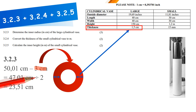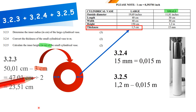Question 3.2.4: convert the thickness of the small cylindrical vase to meters. Thickness is 15 mm; divide by 1,000 = 0.015 m. Question 3.2.5: calculate the inner height in meters of the small cylindrical vase. The total height is 1.2 m minus the base thickness of 0.015 m: inner height = 1.2 − 0.015 = 1.185 m.